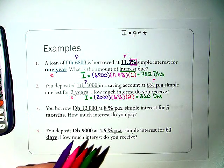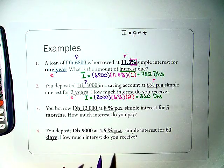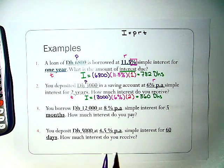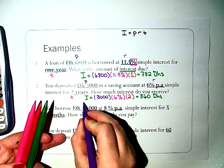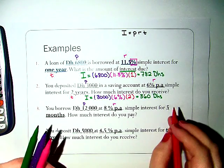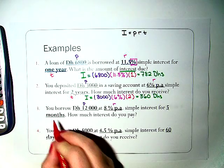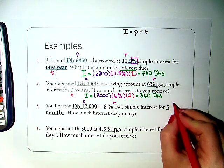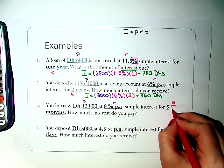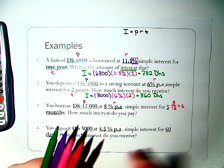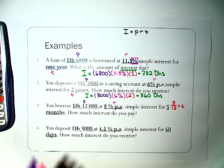Okay, another two problems just to make sure we get it. You borrowed 12,000 dirhams at 8% PA simple interest for five months. How much interest do you pay? So this is my principal, this is my rate. Now it says five months. So because it's five months and we need to make it a year, there are 12 months in a year. So we're going to say time is 5 over 12, because that's five months out of the year.